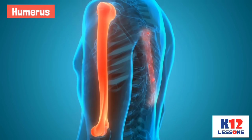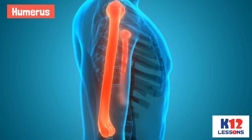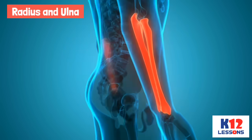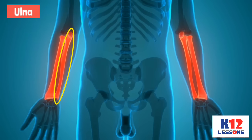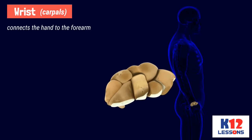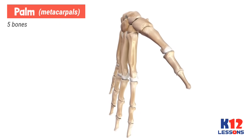The upper arm has one long bone called the humerus, and two bones in the lower arm known as the radius and ulna. The radius is one of the two large bones of the forearm, while the ulna is usually slightly longer than the radius, and the radius is usually thicker. The wrist connects the hand to the forearm, and each wrist or carpal consists of eight bones. The palm or metacarpal has five bones.